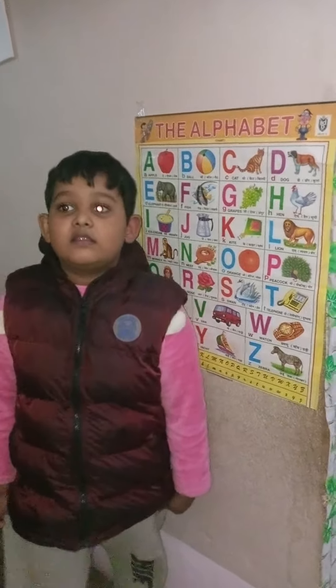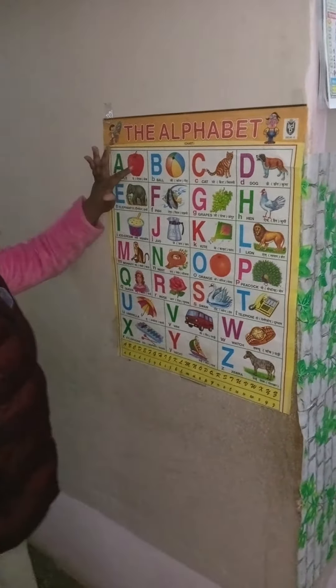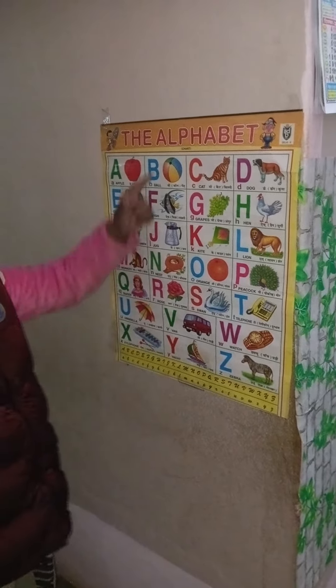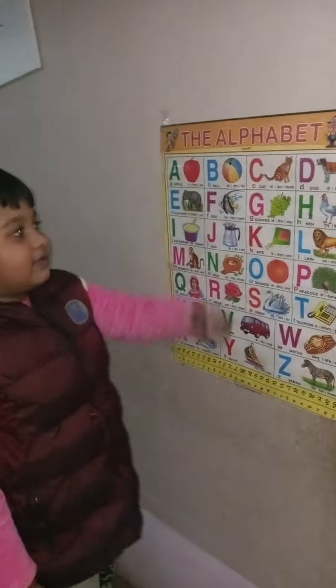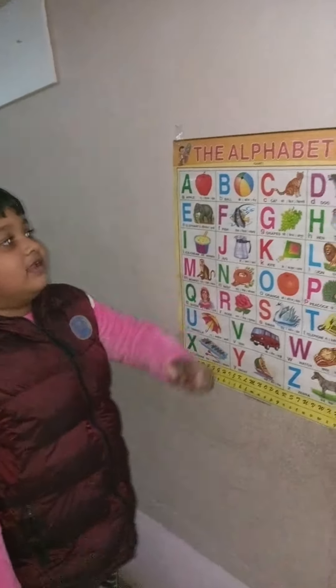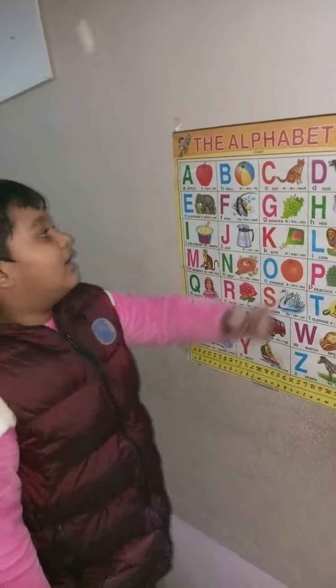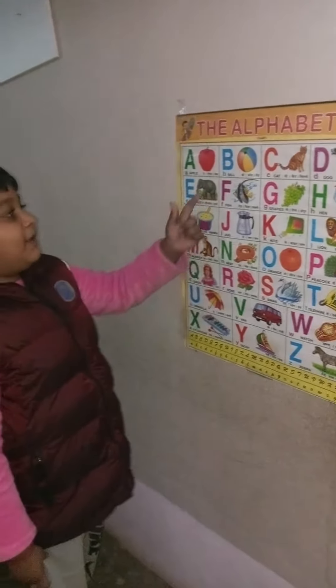A for apple, B for ball, C for cat, D for dog, E for elephant.